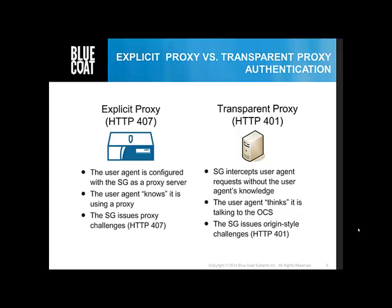Whether you select explicit or transparent proxy deployment is determined by factors such as network configuration, number of desktops, desired user experience, and desired authentication approach. In an explicit proxy configuration, every client system, user, agent, or browser must be explicitly configured to use a proxy server. You can choose to either manually configure each client with the IP address and port number of the proxy service, or you can configure the client to download the proxy settings from a web server. The proxy settings are contained in a file called a Proxy Autoconfiguration, or PAC file.